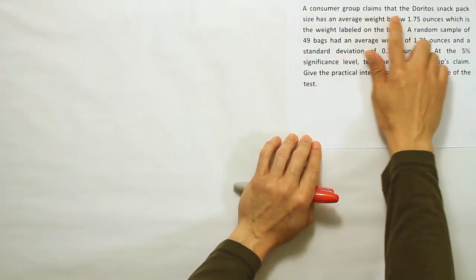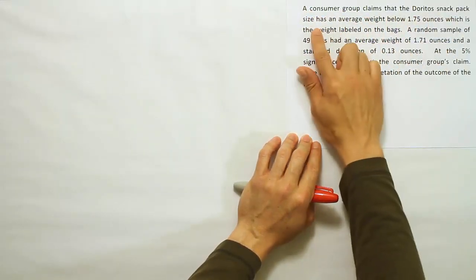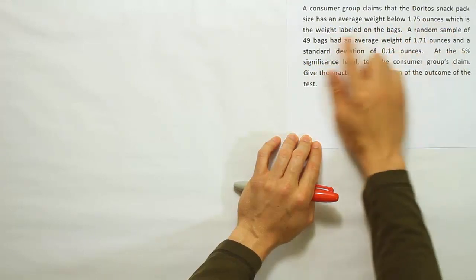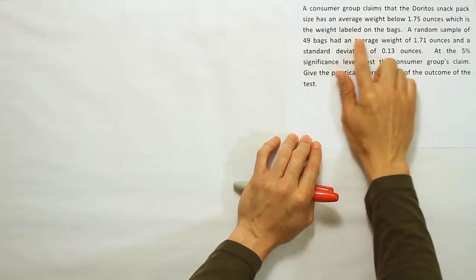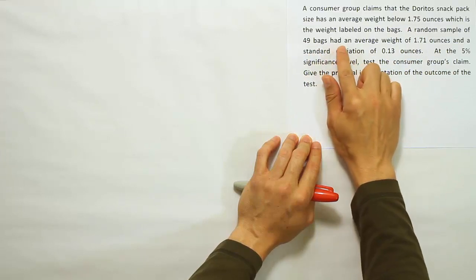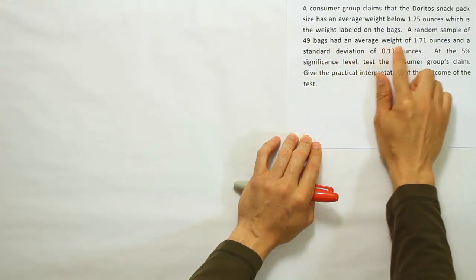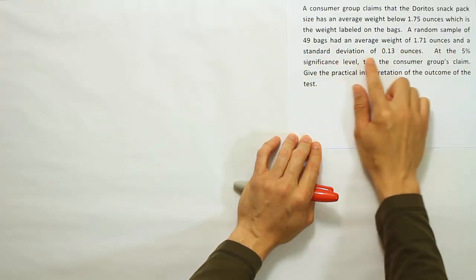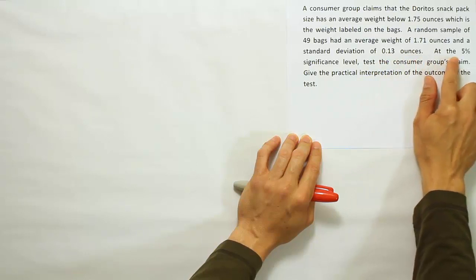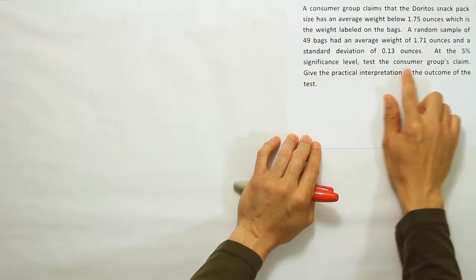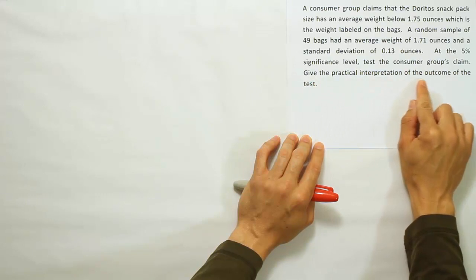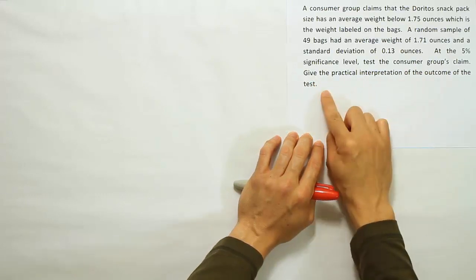A consumer group claims that the Doritos snack pack size has an average weight below 1.75 ounces, which is the weight labeled on the bags. A random sample of 49 bags had an average weight of 1.71 ounces and a standard deviation of 0.13 ounces. At the 5% significance level, test the consumer group's claim and give the practical interpretation of the outcome of the test.